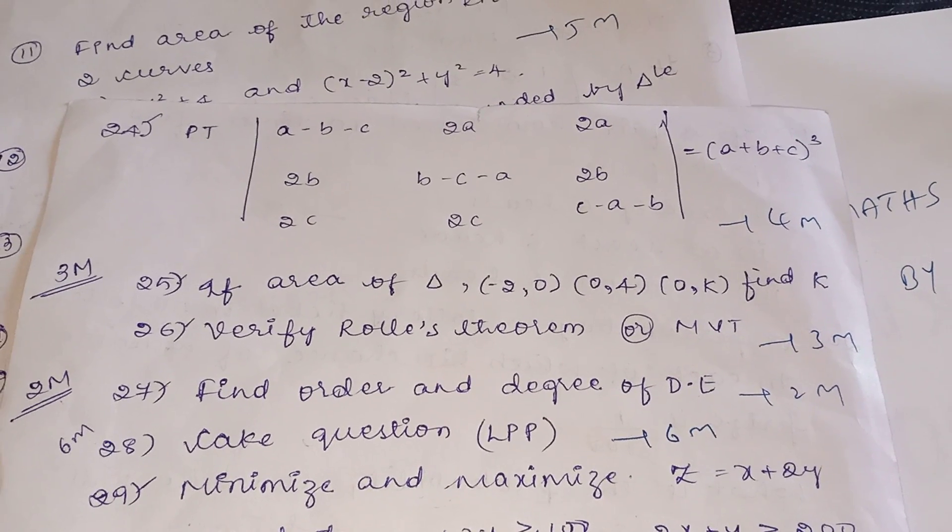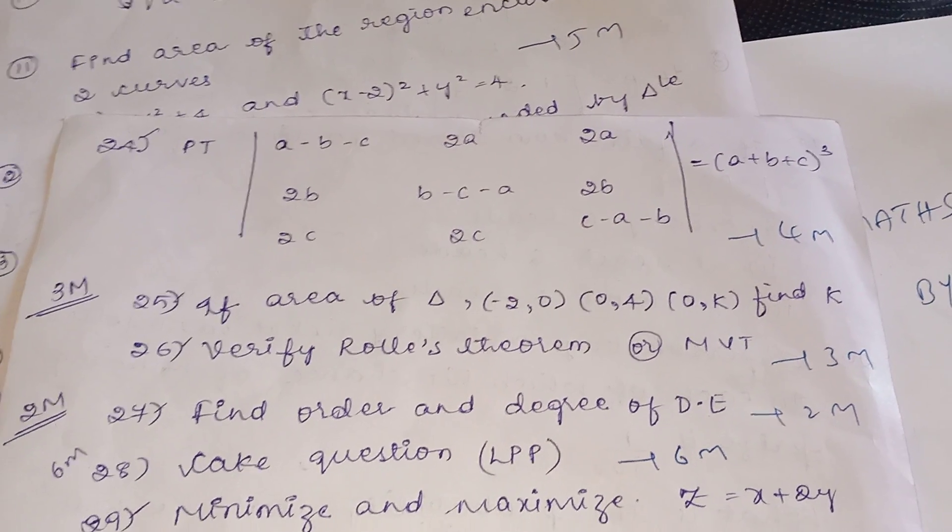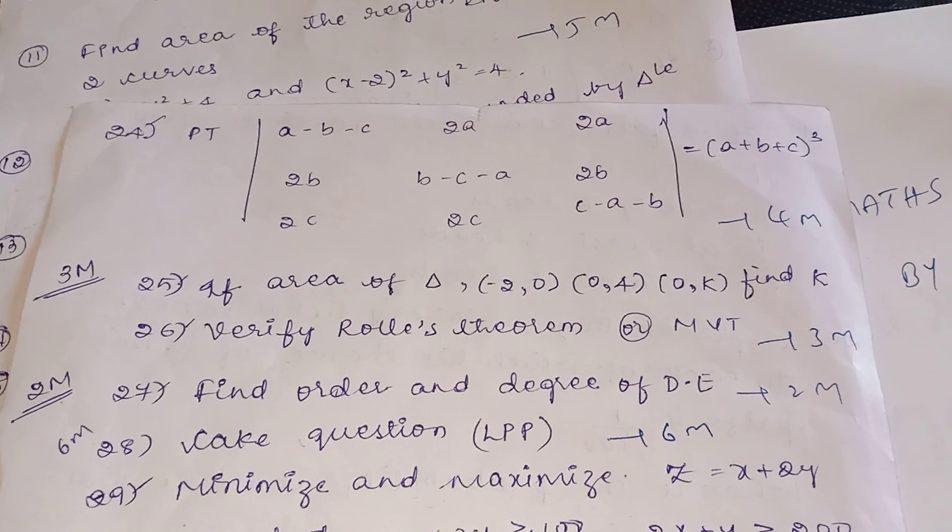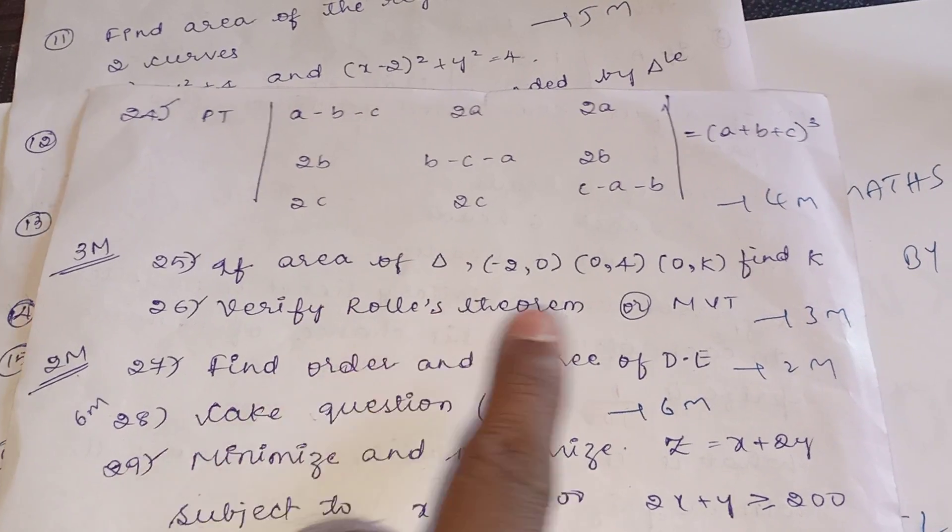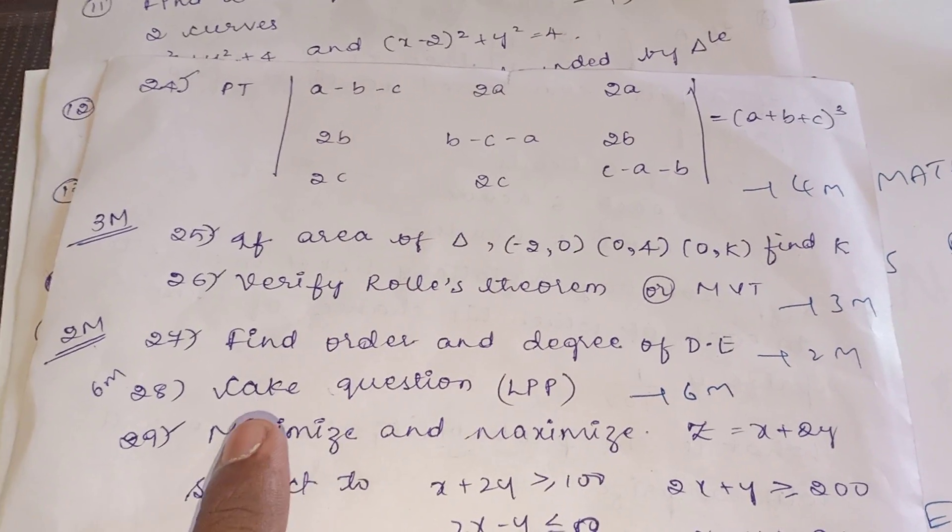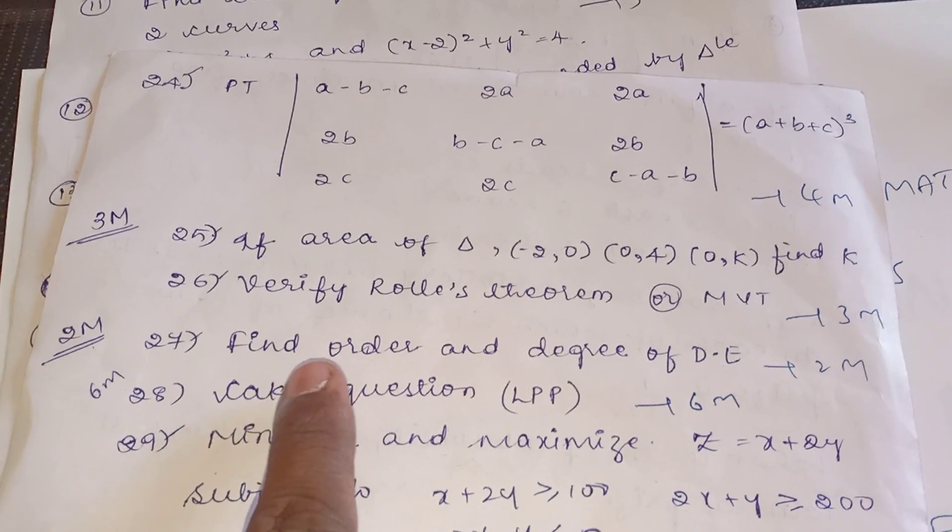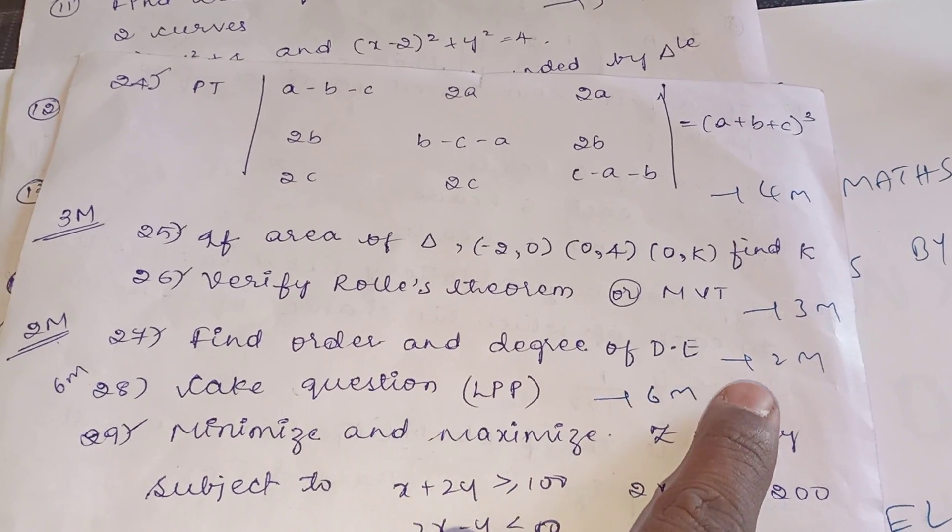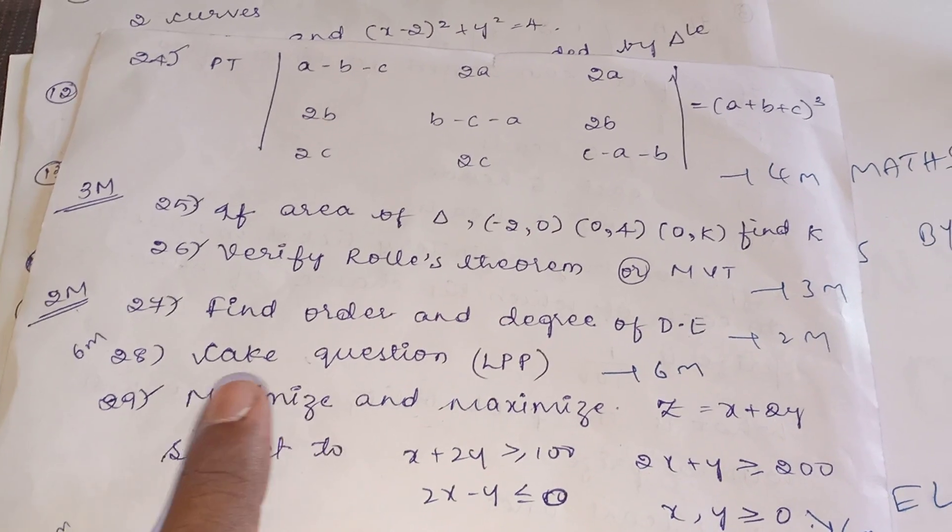Then only have one more, that is equation. Find the equation, out of those two any one they will ask. Next is we know very well, verify Rolle's theorem. Rolle's theorem they can ask, that is for three marks. Rolle's or mean value theorem, MVT mean value theorem.